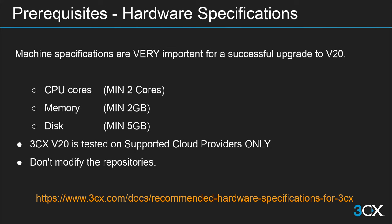Before moving on to version 20, it's very important that you meet the hardware specification requirements. The minimum requirements are two CPU cores, two gigabytes of memory, and five gigabytes of hard drive. If you don't meet these specs, the upgrade will fail and will not proceed. Version 20 has been tested on supported cloud providers only: Amazon AWS and LightSail, Google Cloud, Microsoft Azure, DigitalOcean, and Vultr. Also, if you have modified the Linux repositories, that may cause the upgrade to fail — please refrain from doing so. We can only upgrade a vanilla 3CX ISO installation that hasn't been modified.